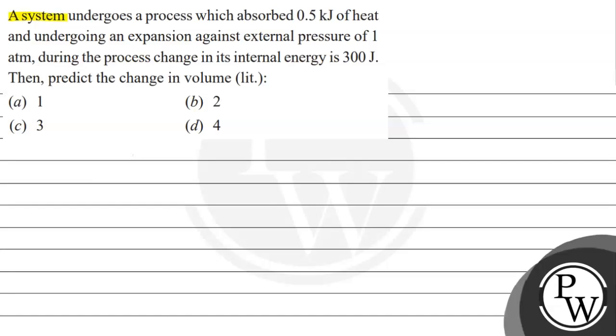Hello, let's read this question. A system undergoes a process which absorbs 0.5 kJ of heat and undergoing an expansion against external pressure of 1 atmosphere. During the process, change in its internal energy is 300 joule. Then predict the change in volume in liters. And these are the following options given to us.